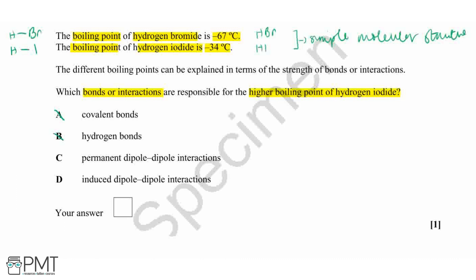Both of these compounds have permanent dipole-dipole and induced dipole-dipole interactions. However, iodine is further down in Group 7, so it has weaker permanent dipole-dipole interactions. This does not explain why it has a higher boiling point - if it had weaker permanent dipole-dipole interactions, we would expect it to have a lower boiling point.